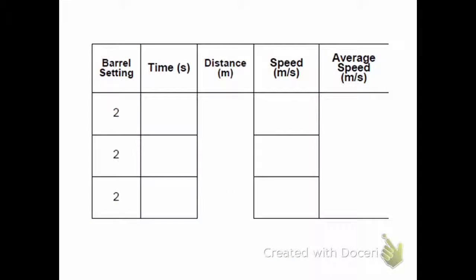So now I've zoomed in on the first part of the data table. I'm at barrel setting two clicks, and I'm going to write down our three times from our three launches in the data. Okay, so here's the three times that our marble took to go through the launcher's photo gate when it was pulled back two clicks.